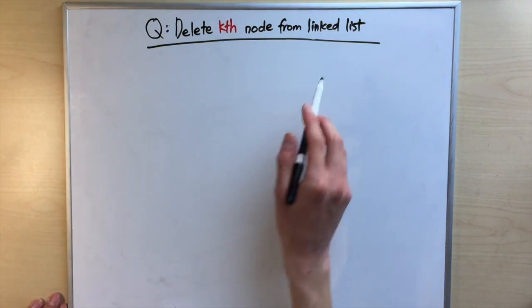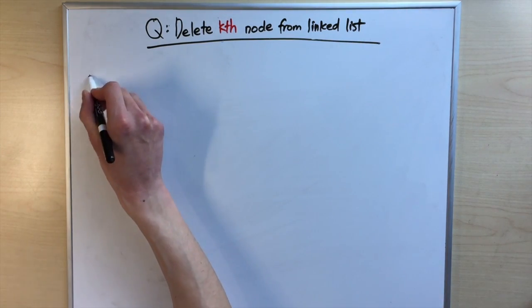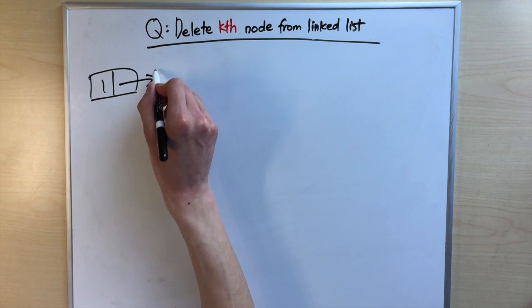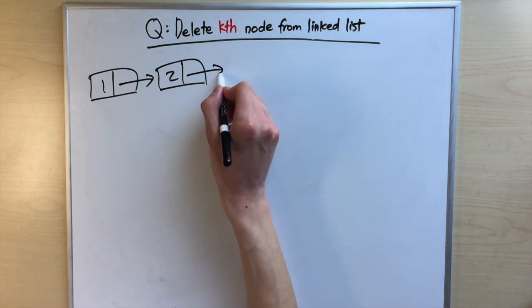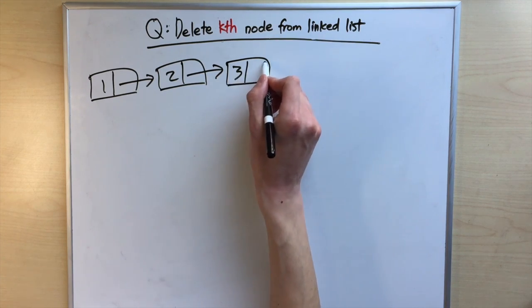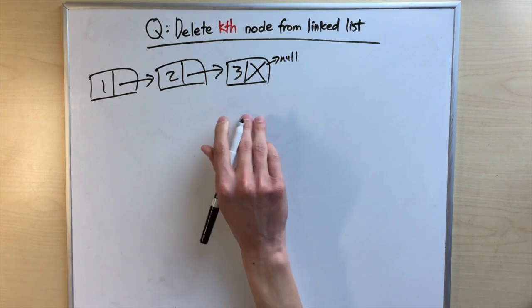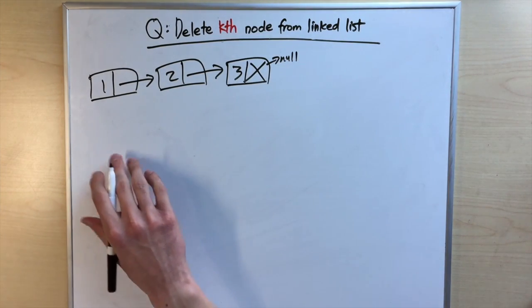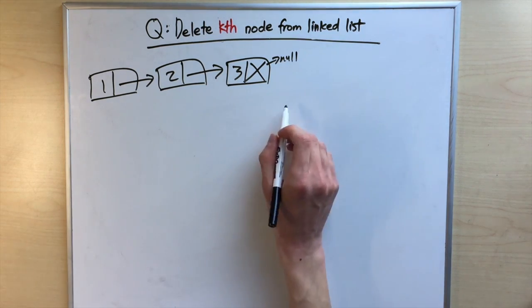A linked list is just a series of nodes. Let's look at a linked list with three nodes: a node containing one points to a node containing two, which finally has a node containing three. This final node points to null, which means we're at the end of our linked list.